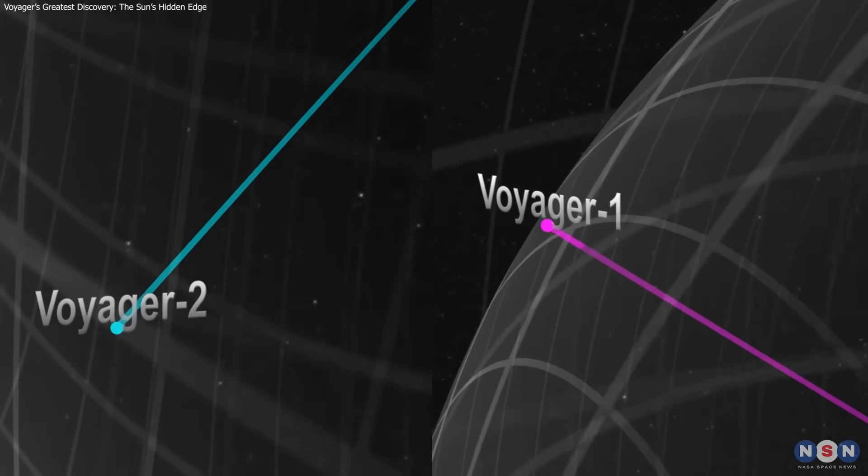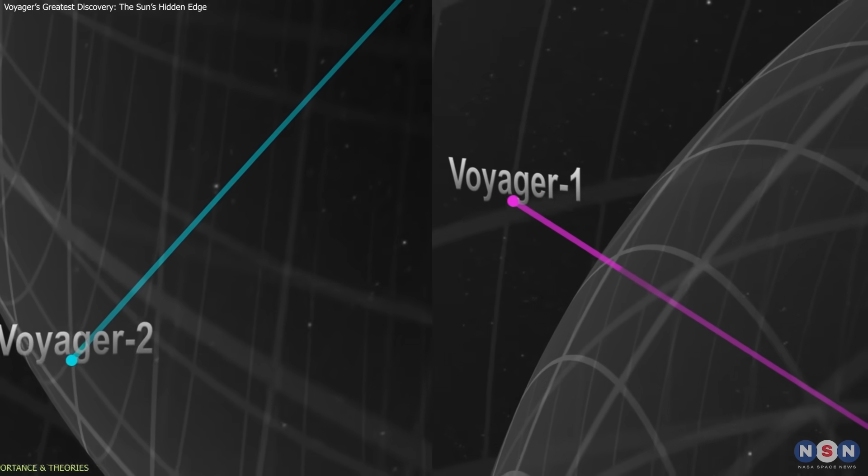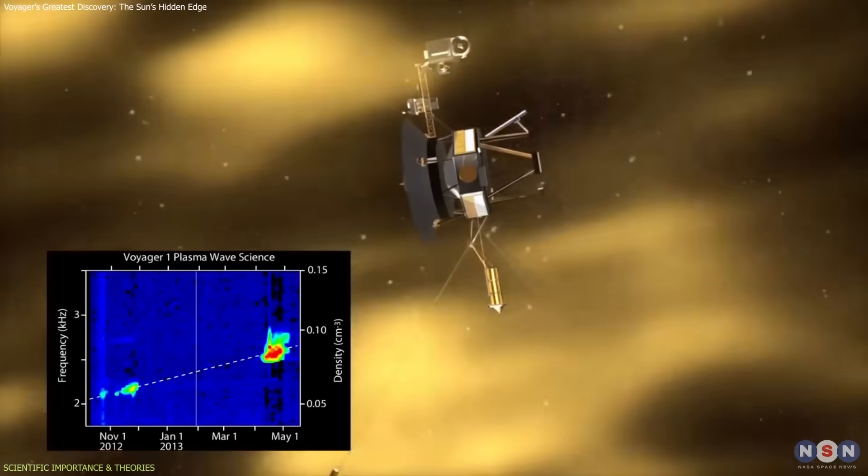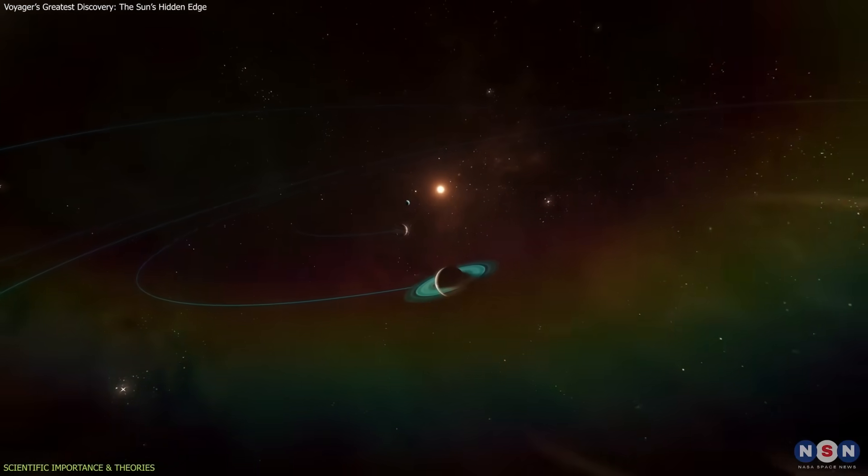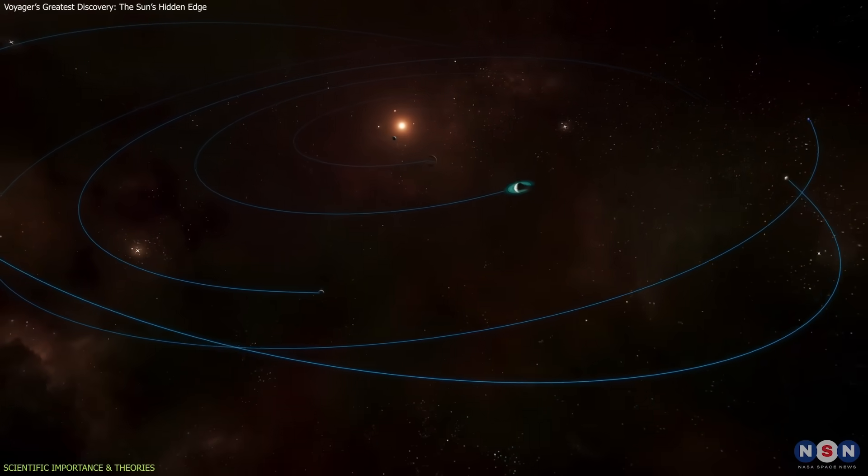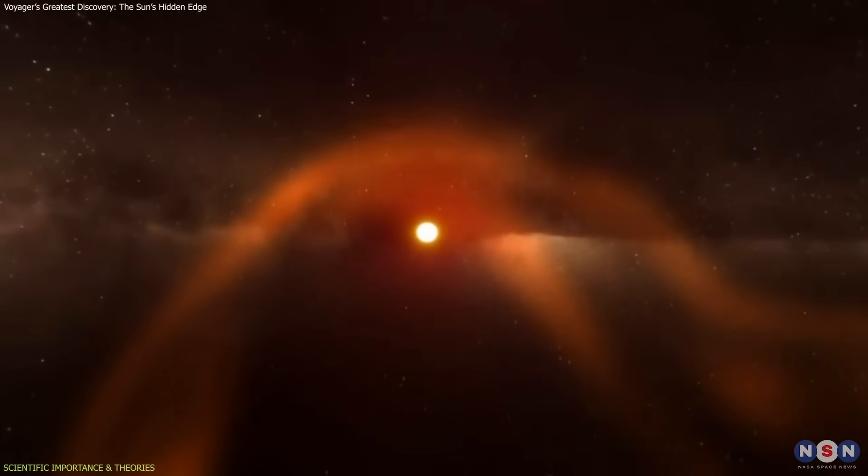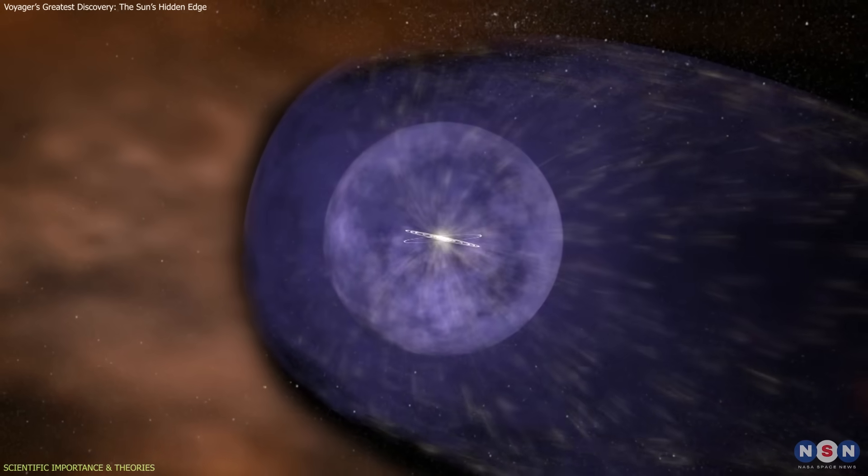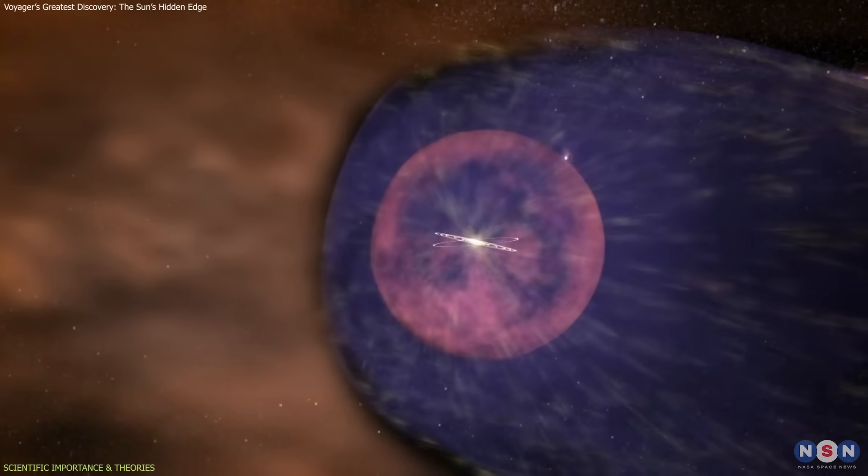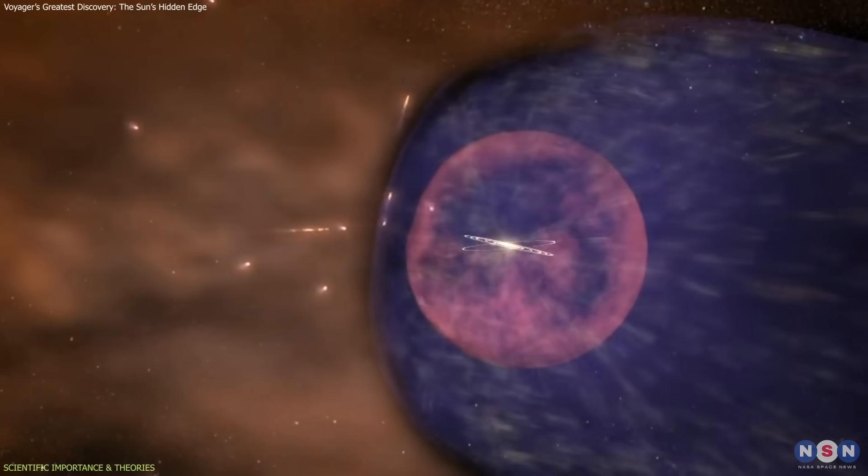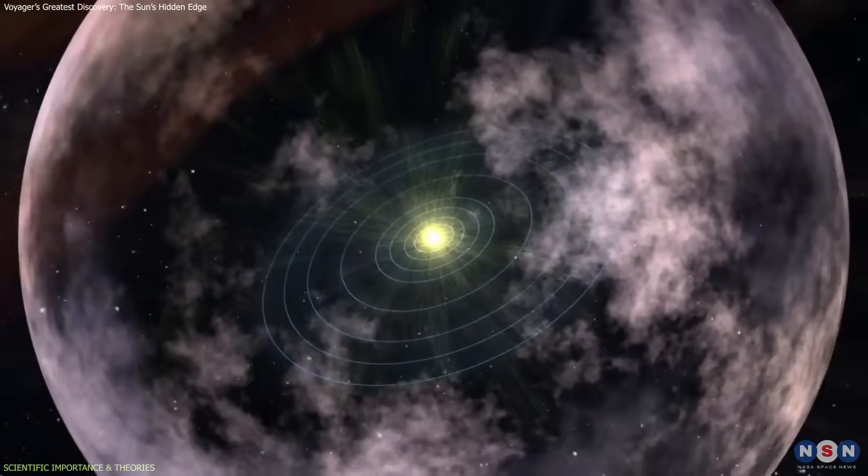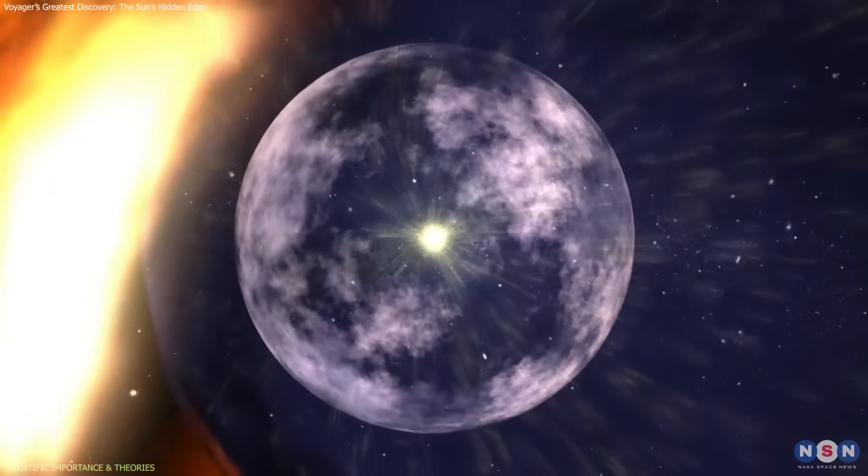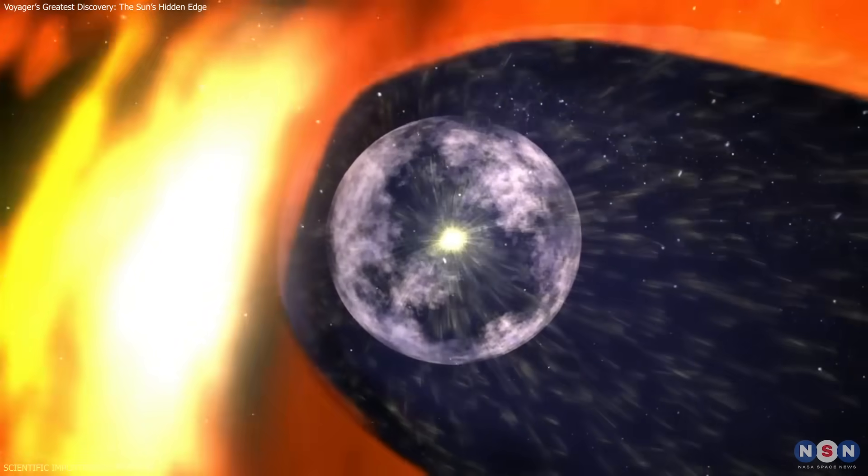The Voyager's crossing turned a theoretical idea, the heliosphere's outer limit, into measurable reality. It revealed that the Sun's magnetic bubble extends far beyond the planets and behaves more dynamically than expected. The heliosphere acts as a protective shield, deflecting much of the galaxy's cosmic radiation. At its edge, where the solar wind slows and meets the interstellar medium, immense compression and heating occur.